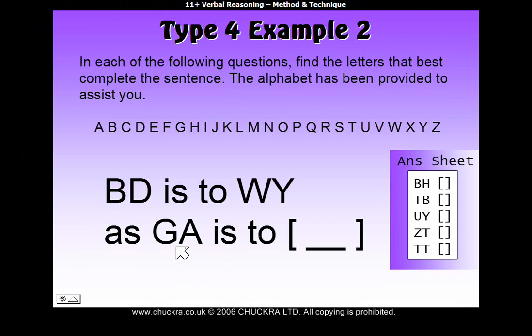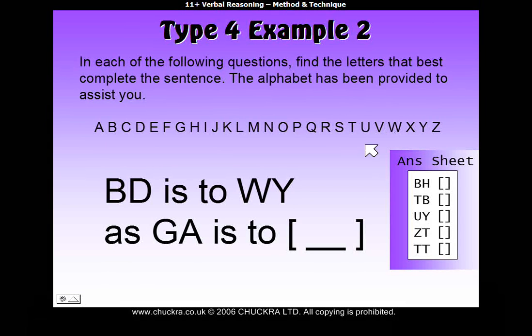So applying the same rules to GA, back 5 from G, we get 1, 2, 3, 4, 5, we get a B. And then back 5 from A, we get 1, 2, 3, 4, 5, we get V.